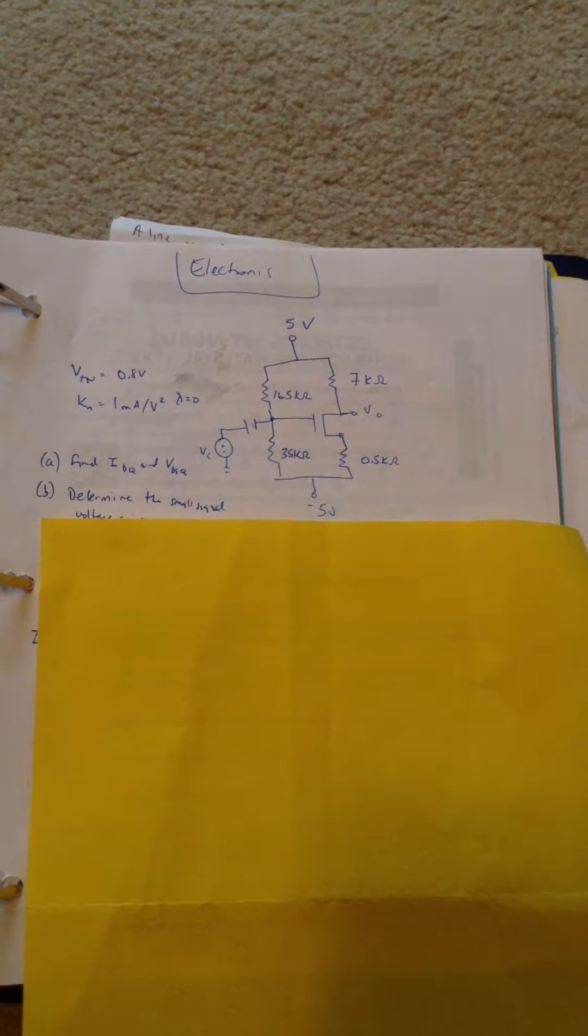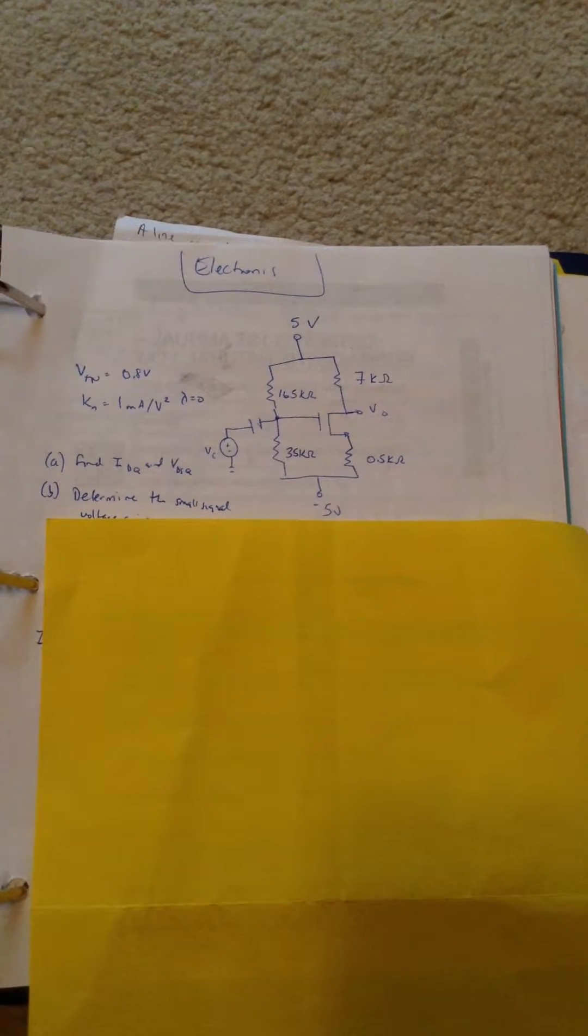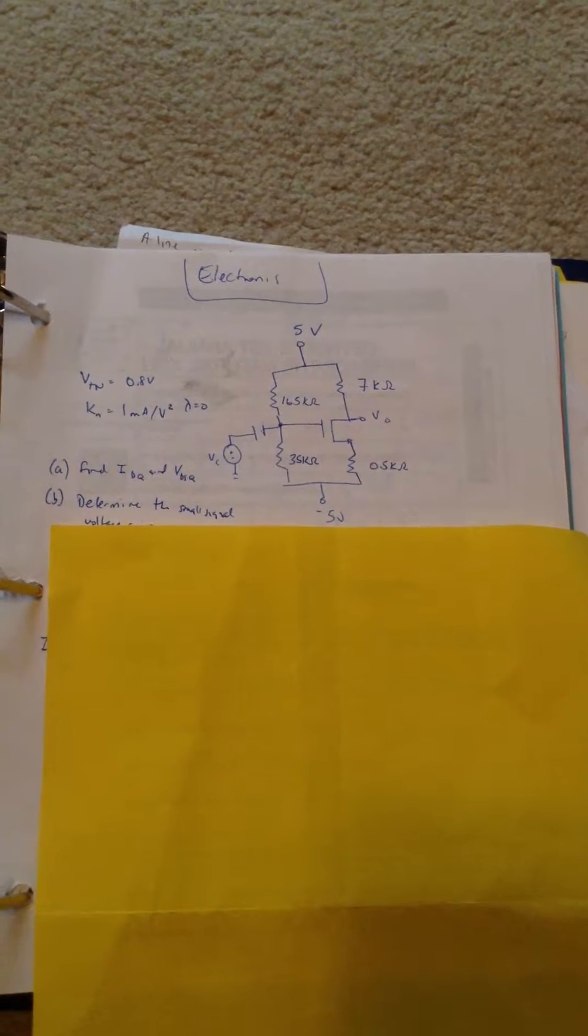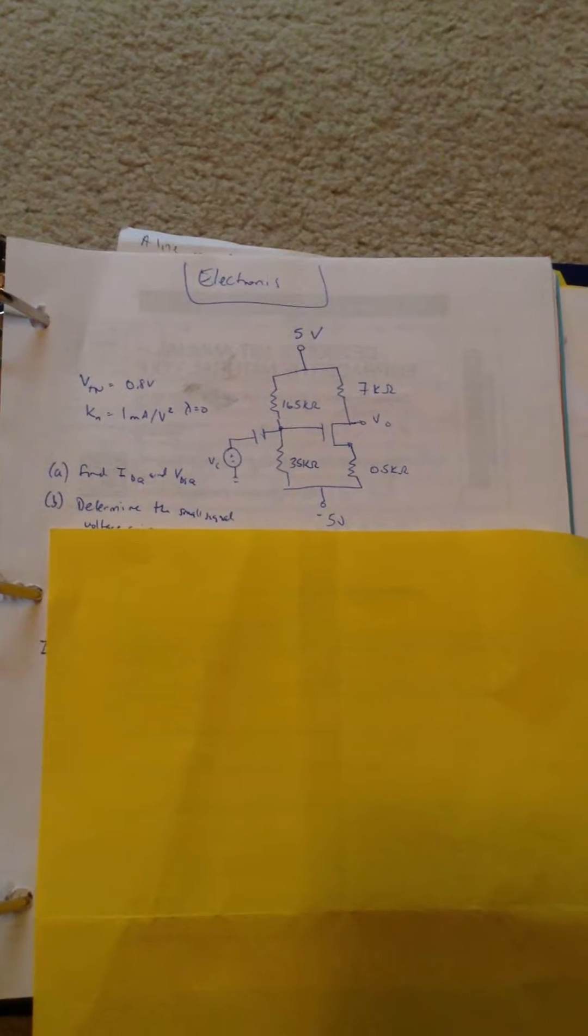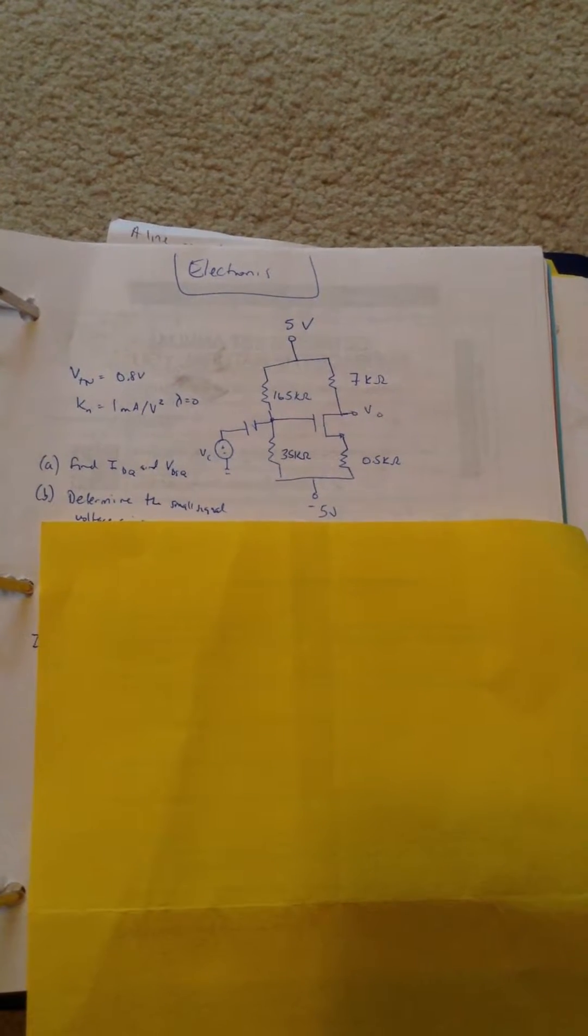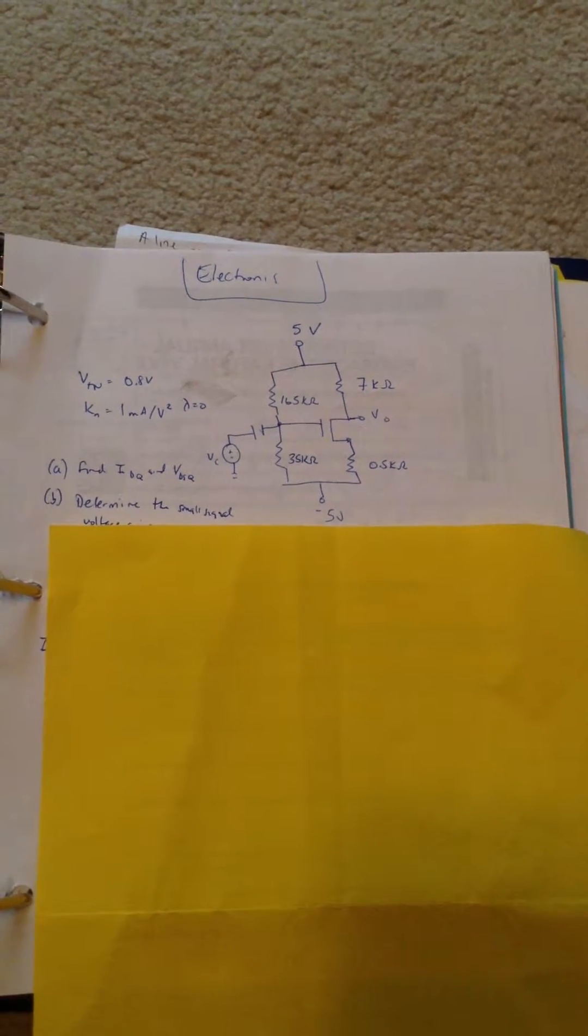It's two parts. It asks for the drain current and the drain source voltage. Second part is going to be the small signal voltage gain. I'm going to break this into two parts, so this part is just going to be solving for I-drain and VDS.